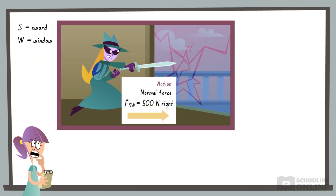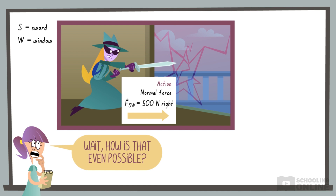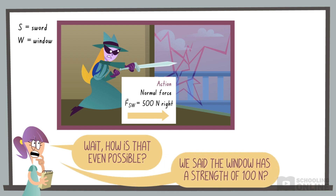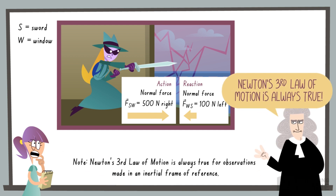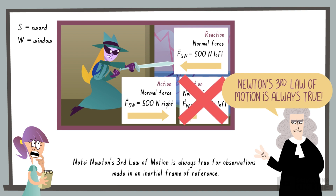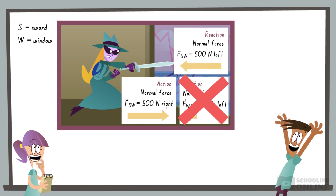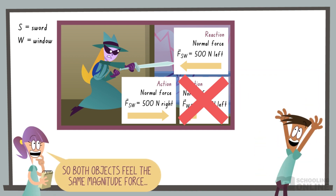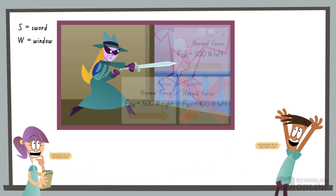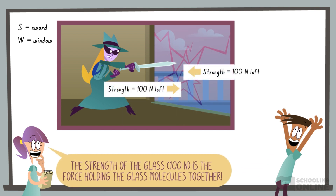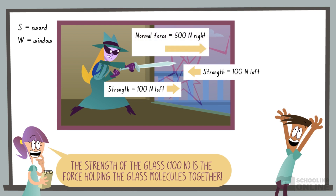Hold on — wouldn't it make sense for the window to push back with a smaller force of 100 newtons left, since that's the breaking strength of the glass? Here's the thing: Newton's third law is always true, regardless of whether an object accelerates and regardless of whether an object breaks. Both objects feel the same magnitude force, even though one comes off worse than the other. Additionally, the strength refers to the forces holding the glass molecules together — this is unrelated to the forces between the glass and the sword.